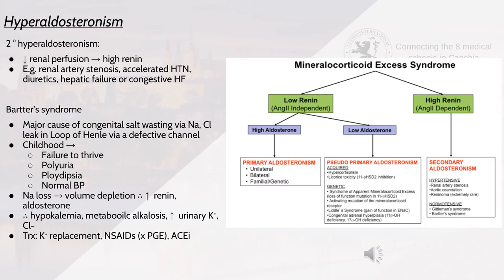Secondary hyperaldosteronism is due to decreased renal perfusion leading to high renin. Causes include renal artery stenosis, accelerated hypertension, diuretics, hepatic failure or congestive heart failure. Bartter syndrome is a major cause of congenital salt wasting due to sodium and chloride leak in the loop of Henle by a defective channel. In childhood it presents as polyuria, failure to thrive, polydipsia and normal blood pressure. Sodium loss leads to volume depletion, increasing renin and aldosterone, resulting in hypokalemia, metabolic alkalosis and increased urinary potassium and chlorides. Treatment involves potassium replacement, ACE inhibitors and NSAIDs to inhibit prostaglandins.